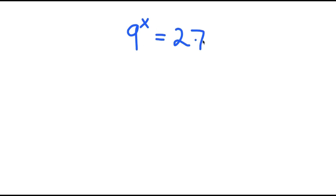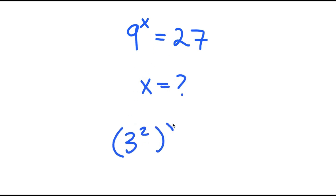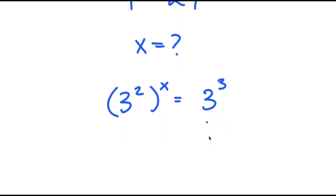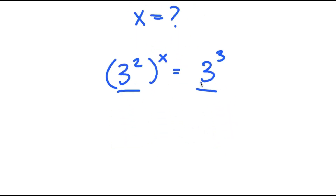So in today's video, I'm going to be solving the equation 9 to the power of x is equal to 27. To solve this, I'm going to start off by rewriting this as 3 squared to the power of x is equal to 3 to the power of 3. I'm doing this so both values can have the same base, which makes it much easier to solve.